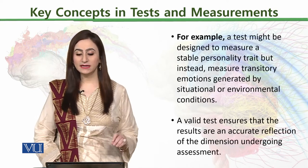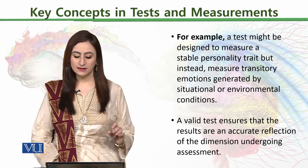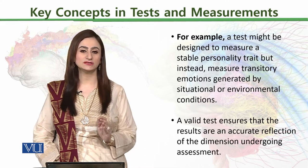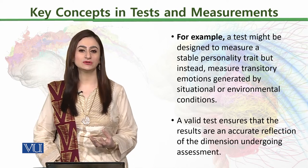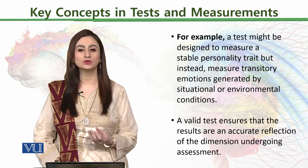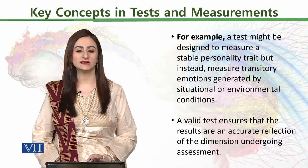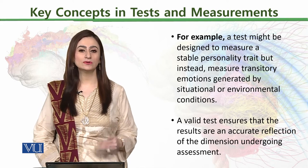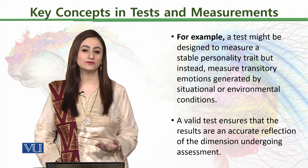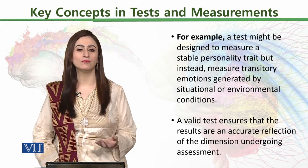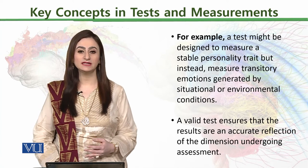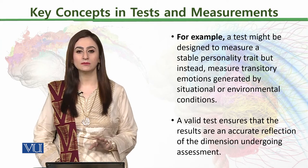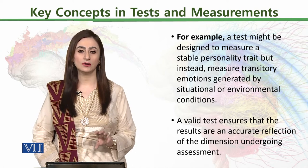For example, a test might be designed to measure a stable personality trait, but instead it measures transitory emotions generated by situational or environmental conditions. We may claim a test is measuring a permanent state — say, your mood — but the items are actually looking at your temporary mood in a specific situation, asking how you feel right now. So that may not be a true or valid picture of your permanent mood state. To be a valid measure, it should measure what it claims to measure. We cannot twist it, manipulate its instructions, or derail its construct.